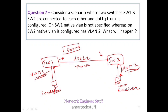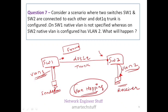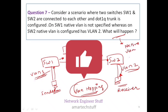This behavior is known as VLAN hopping. The answer to this scenario question is that you will receive a native VLAN mismatch error. This is a common scenario-based question asked in VLAN interviews, and the key answer to note is: native VLAN mismatch.